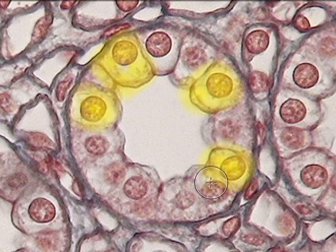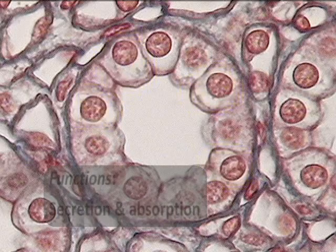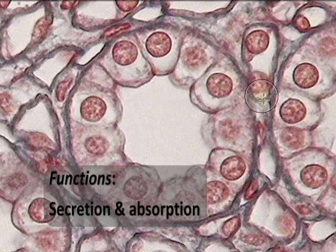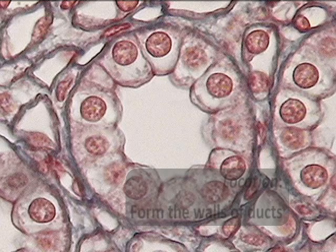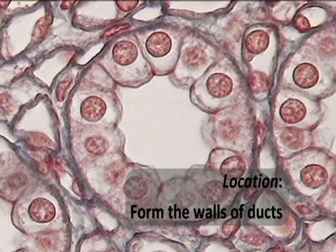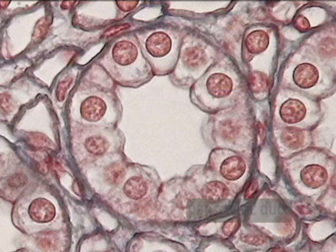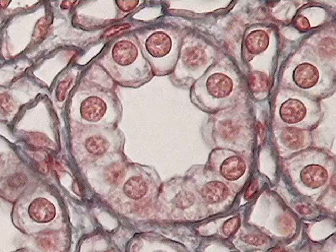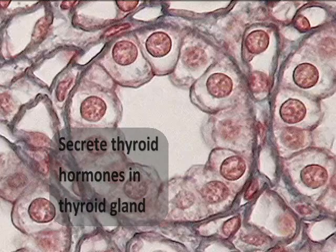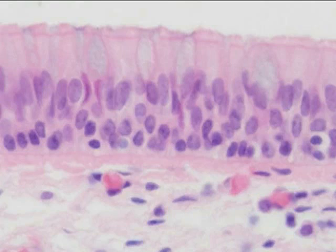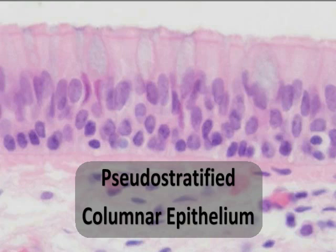Simple cuboidal epithelial cells share the same functions as columnar epithelial cells: secretion and absorption. Location-wise, they're commonly found within ducts, such as the ducts of the kidney tubules. They're also found in ducts leading away from other glands such as the pancreas, and in some cases as a secretory layer producing hormones, as in the thyroid gland.